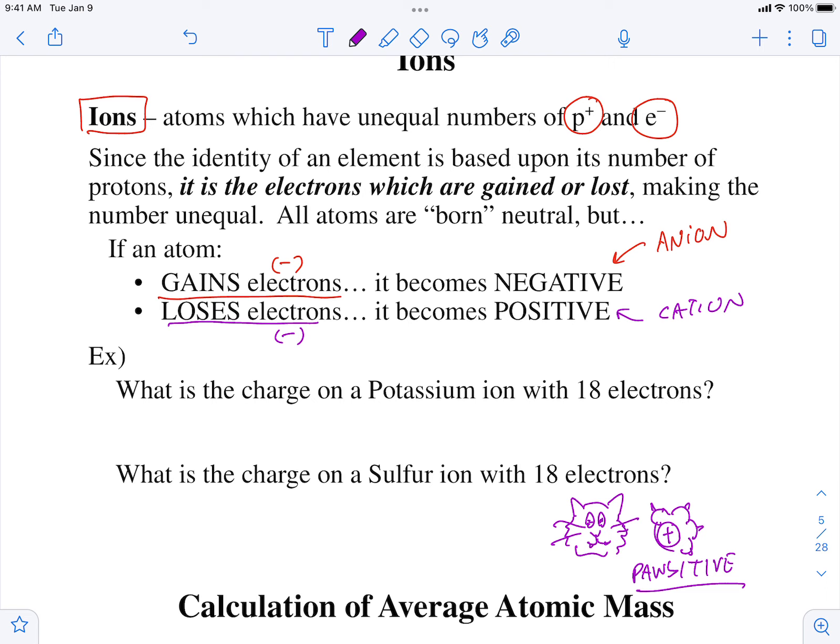What's the charge on a potassium ion with 18 electrons? What you have to do first, you've got to find potassium. What's the atomic number on potassium? 19. So write it this way: 19 positives, 18 electrons. What does that equal? 19 positives and 18 negatives...